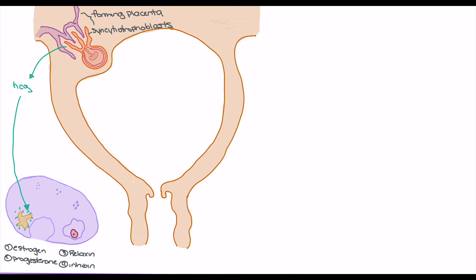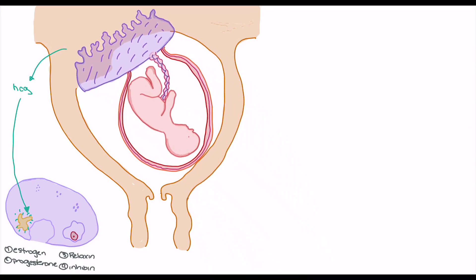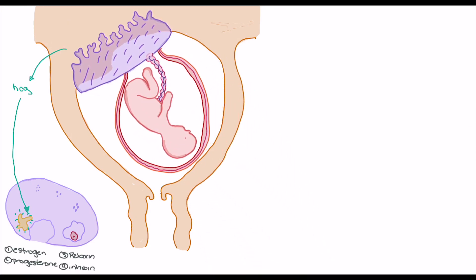Because of rising HCG levels in early pregnancy needed to keep the corpus luteum alive, it's these levels that are used in pregnancy tests to determine pregnancy. Around month four, the placenta is fully developed, taking about three to four months to form. This allows the placenta to perform its typical functions for the fetus and also take over hormone secretion.